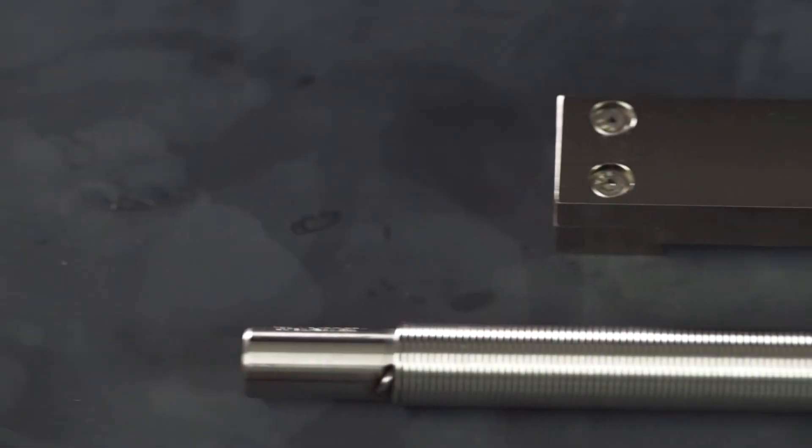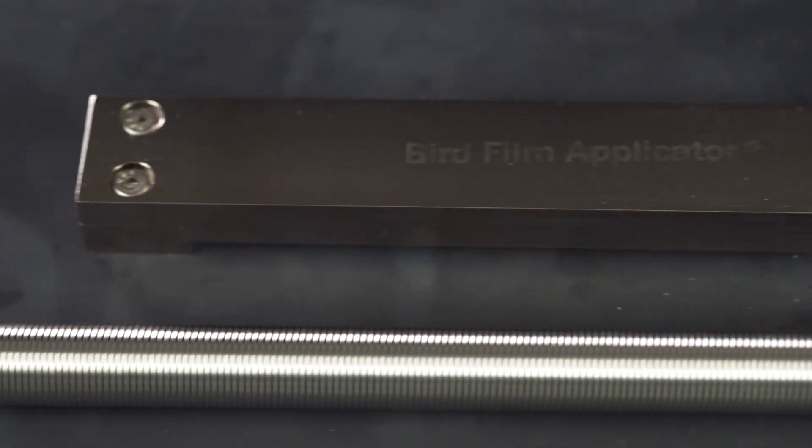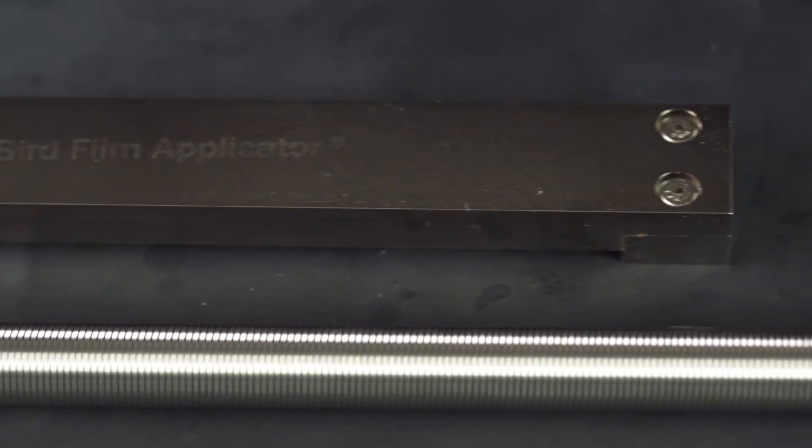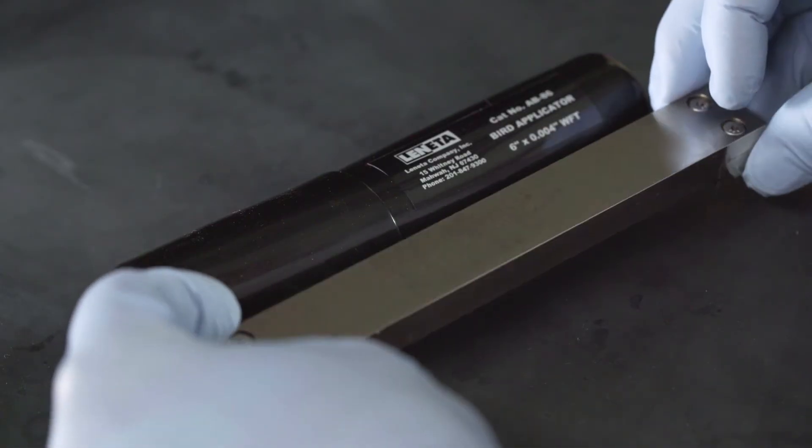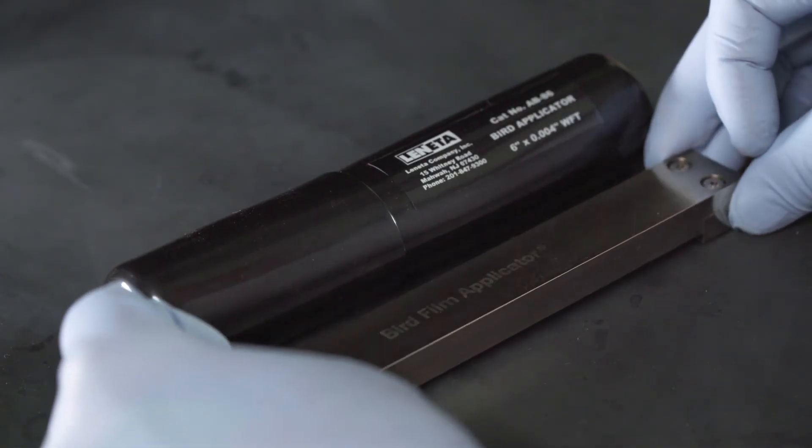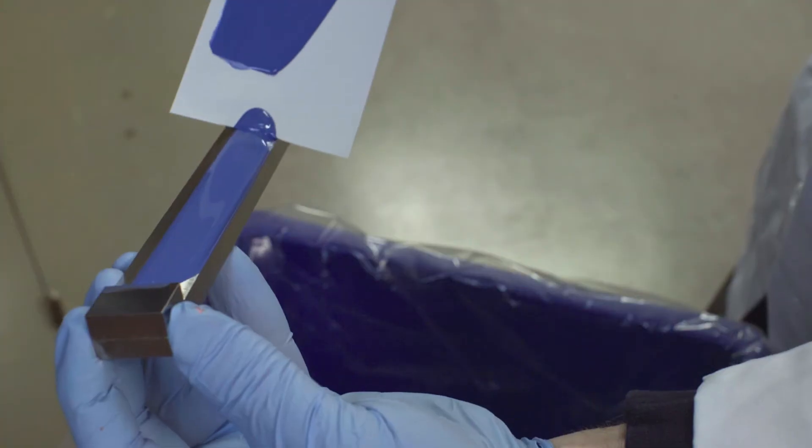The next step in performing a successful drawdown is choosing an applicator. Lenita recommends two types of applicators: blade type or bird applicators. These are straight metal bars that are precision machined and easy to clean.